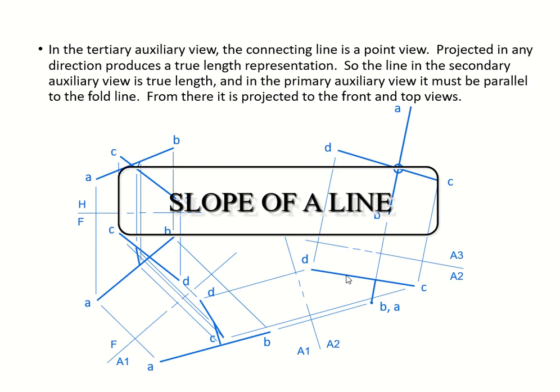So the line in your secondary auxiliary view is your true line, and in the primary auxiliary view that's come from your parallel of the fold line. Because here you remember how we parallel that, and then you have your true line and then we project this into that.